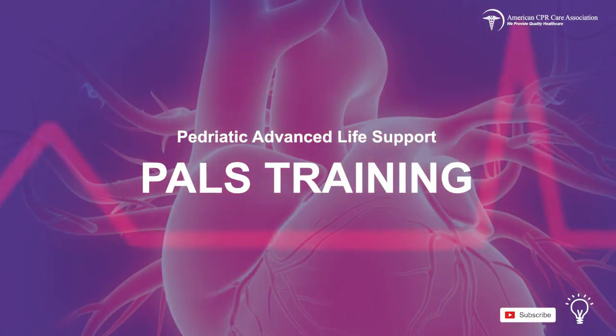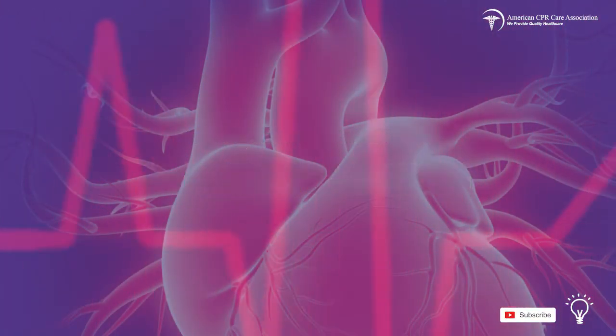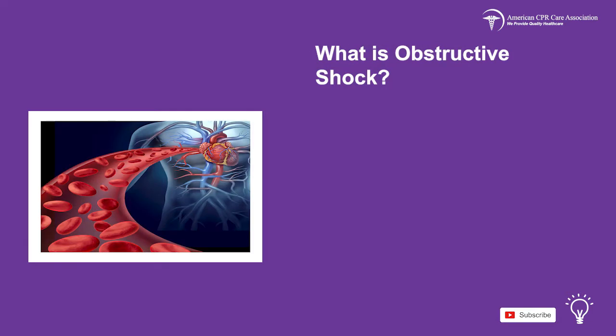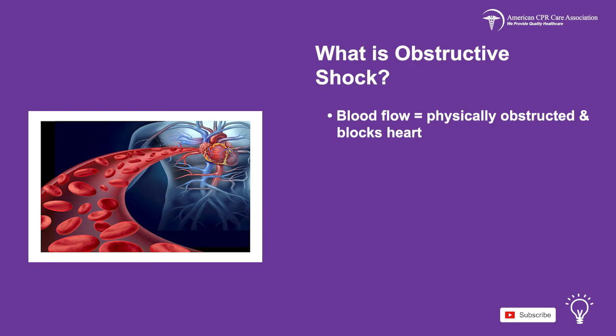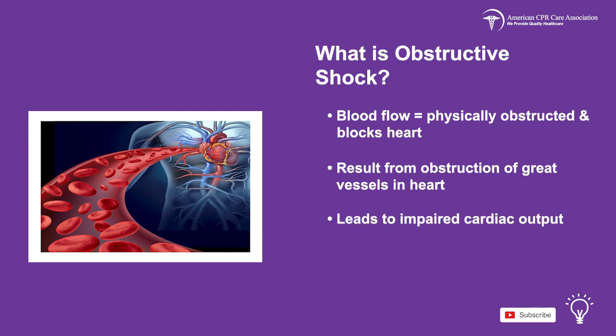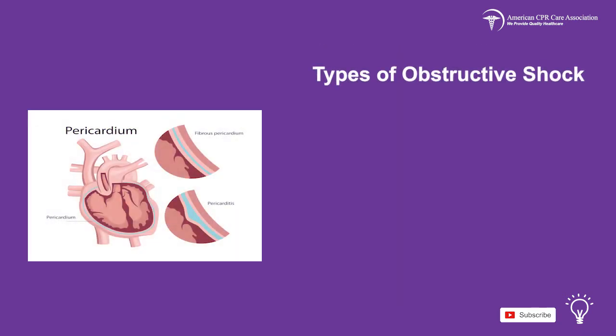Welcome to the fourth video in our series on shock in children. The fourth and final form of shock seen in children is obstructive shock, which is when blood flow is physically obstructed, blocking the heart. This is the result of an obstruction of the great vessels of the heart and leads to impaired cardiac output. The proper management of obstructive shock revolves around the correction of cardiac output and tissue perfusion.